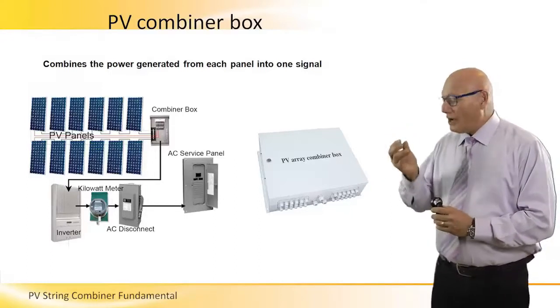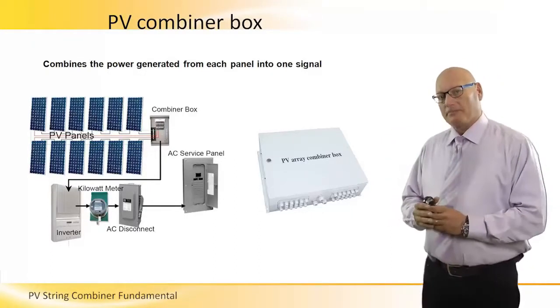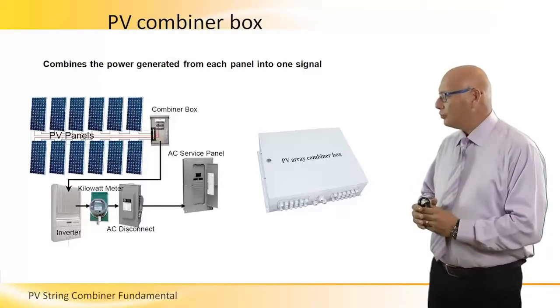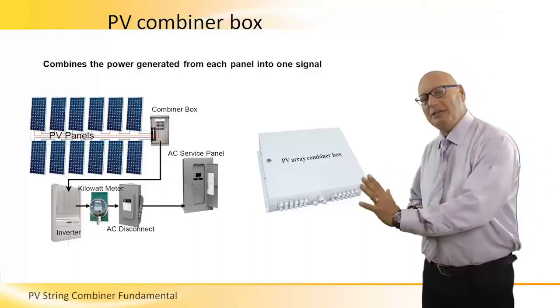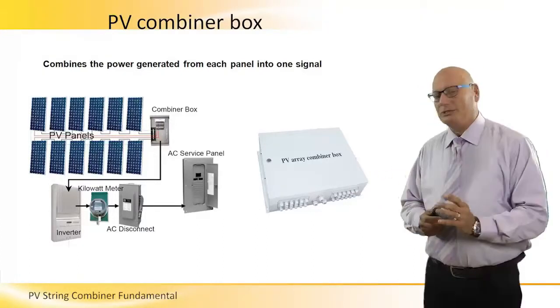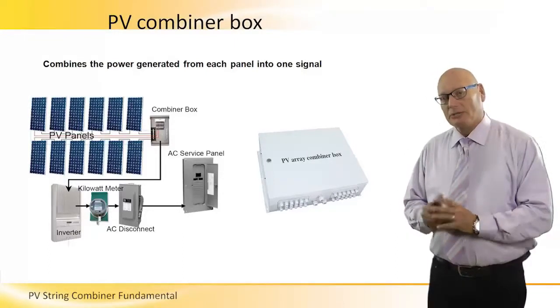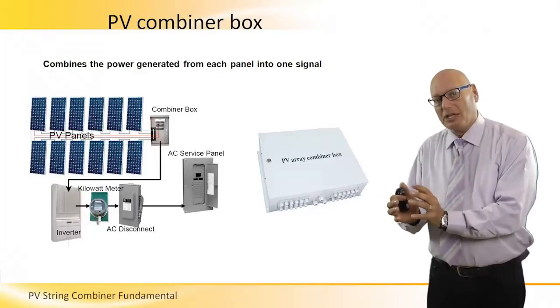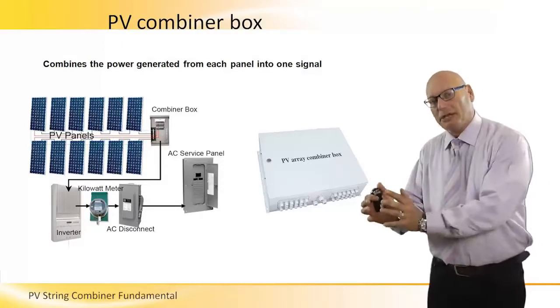The combiner is right next to the panels in order not to have many DC cables running all the way to the inverter. So the combiner combines all the DC cables, the pluses together and the minuses together, and only two cables running to the inverter.